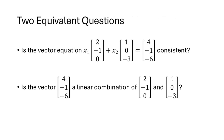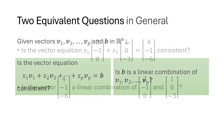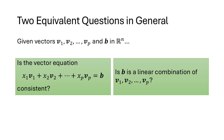This gives us two equivalent questions. We can ask whether a vector equation is consistent, or equivalently, we can ask whether the vector b is a linear combination of the vectors v1 through vp. These two questions are interchangeable.